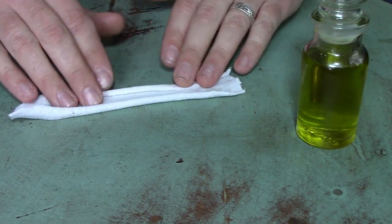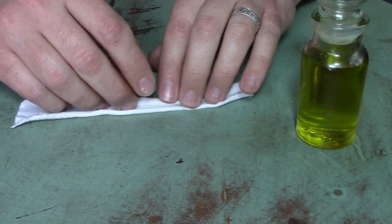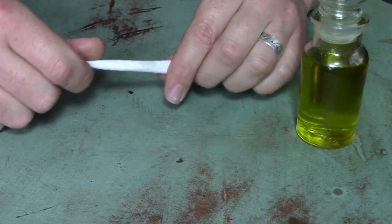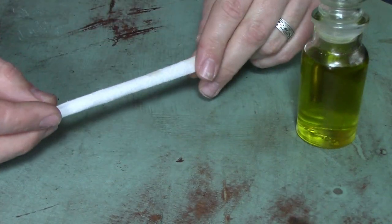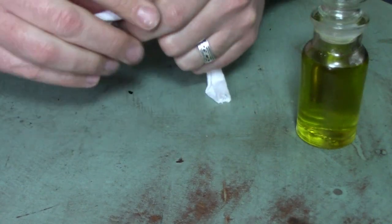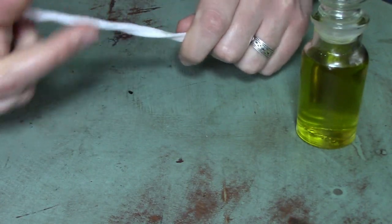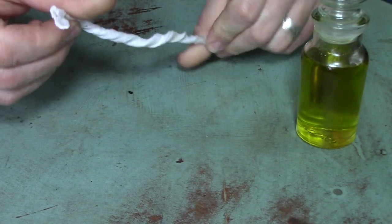What we're going to do is we're going to take this fabric and just kind of roll it up. It doesn't have to be super tight, but just roll it. Kind of start condensing it down to a rolled up shape.